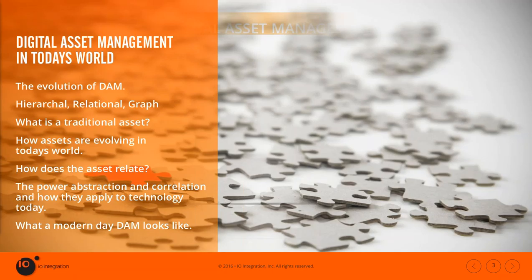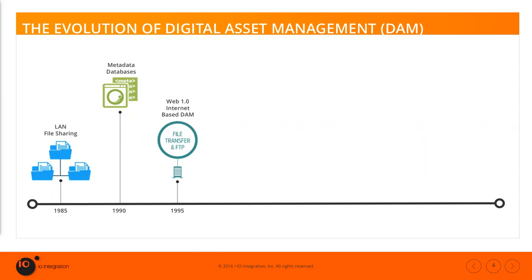Way back when, about 30 years ago, digital asset management really meant primarily local area networks and file shares — a common space on the network where everybody could go and access files. Early DAM really was file management. They started to layer fairly simplistic databases on top to manage the metadata, but really early DAMs were primarily just glorified file transfer and FTP sites with very simple relations between their assets and their metadata.